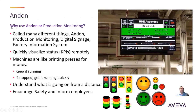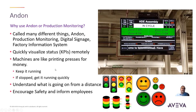What we're talking about here is something like Andon. If you're not familiar with Andon or production monitoring, it's called different things — could be digital signage, factory information systems, big screen TVs, or big boards up in the rafters or hanging on the wall. It allows you to quickly visualize the status and understand what's going on.